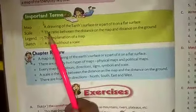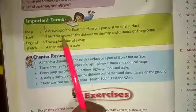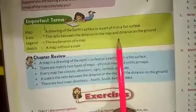Now let's move on the next question. Four, what is a scale? Here is the answer in the page number 60. A scale is the ratio between the distance on the map and distance on the ground. Fifth number, what is the legend? The legend is the explanation of a map.